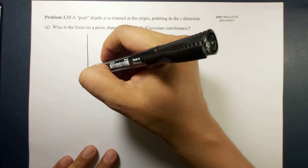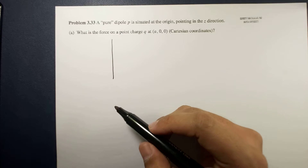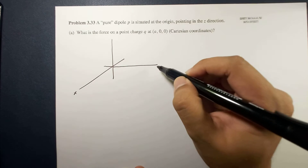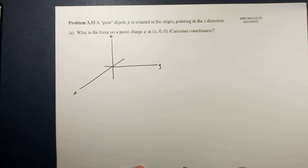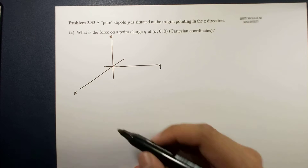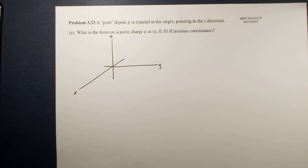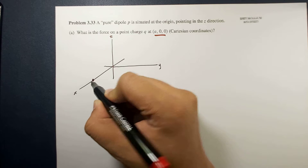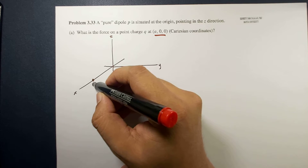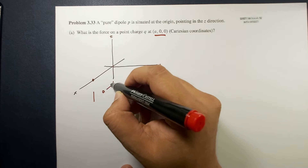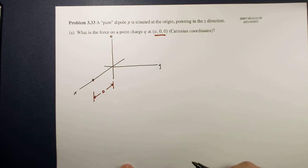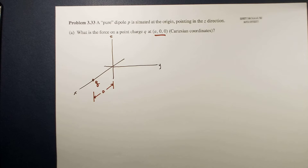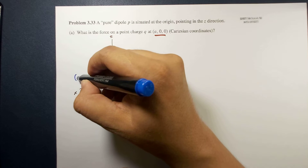So this is our Cartesian coordinate system. Let's say this is X, this is Y, and this is Z. We choose one point along the X axis — let's say this point. This is A, and this is where our Q is. So the point we're talking about here is (A, 0, 0).